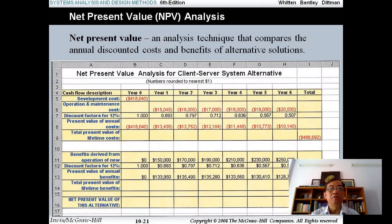You see here using Excel to calculate the net present value analysis. Net present value analysis technique compares the annual discounted cost and benefit of alternative solutions. You see here in column A, you have benefits, I mean the cash flow description. You have development cost, operation maintenance cost, and so forth. You have 7 years from year 0 to year number 6 in total. You can analyze by using Excel. You can calculate the net present value analysis.